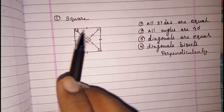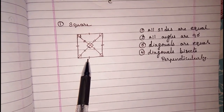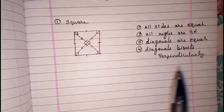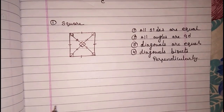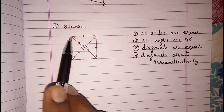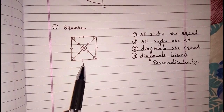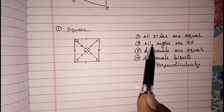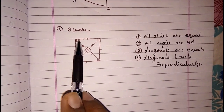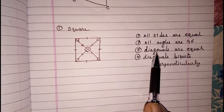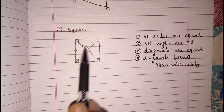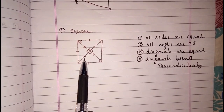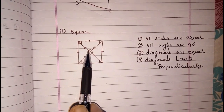We know there are still more properties — like opposite sides of a square are also parallel — but we are not covering that right now. To summarize: all sides are equal, all angles are 90 degrees, diagonals are equal, and diagonals bisect each other perpendicularly, meaning they bisect and are perpendicular.